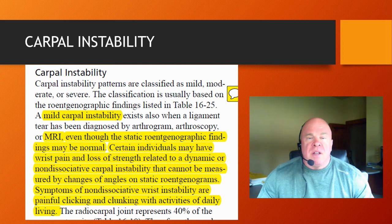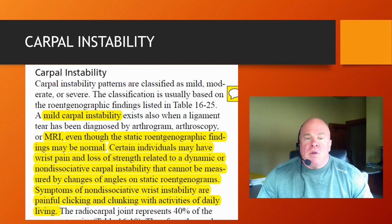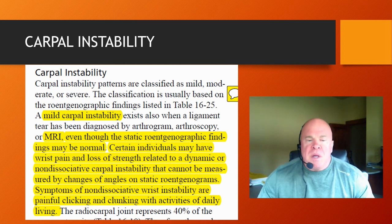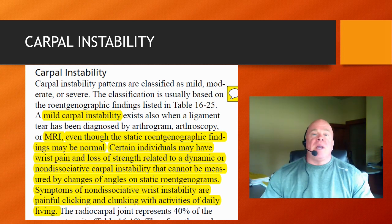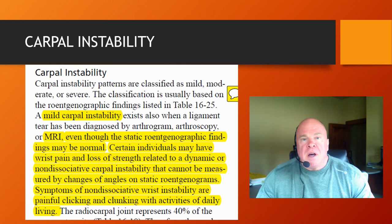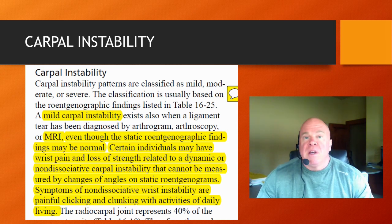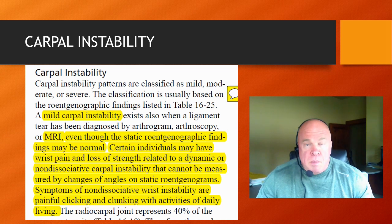These classifications are usually based on the x-ray findings listed in Table 16-25, which we'll go over. Even in the case where x-ray findings are normal, a mild carpal instability exists when a ligament tear has been diagnosed by arthrogram, arthroscopy, or MRI — even though static x-ray findings may be normal. So the AMA Guides are quite generous in providing for a permanent impairment rating of mild instability for examinees who have evidence on MRI, arthroscopy, or arthrogram of a bona fide ligament tear, even with no characteristic carpal instability findings on static x-rays.